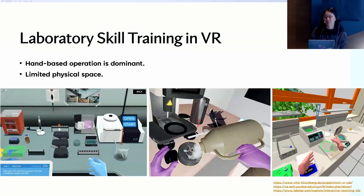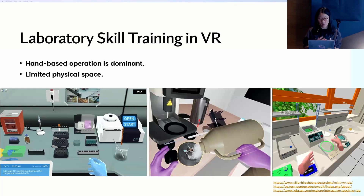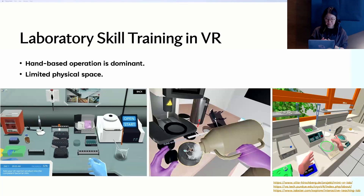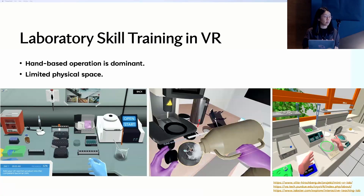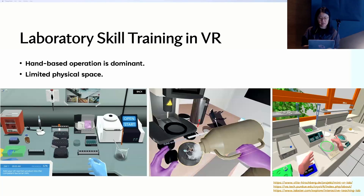First, background and motivation: virtual reality has been widely used for laboratory skill training. Such training tasks often involve a series of hand-based operations requiring users to move around and manipulate objects, often in a limited physical space. The most popular locomotion approach for such physical limitations is point-and-teleport, achieved with hand controllers. However, it may not be ideal for skill training tasks where hand-based operations are dominant, because users may experience physical and cognitive stress when also needing to activate teleportation with their hands.